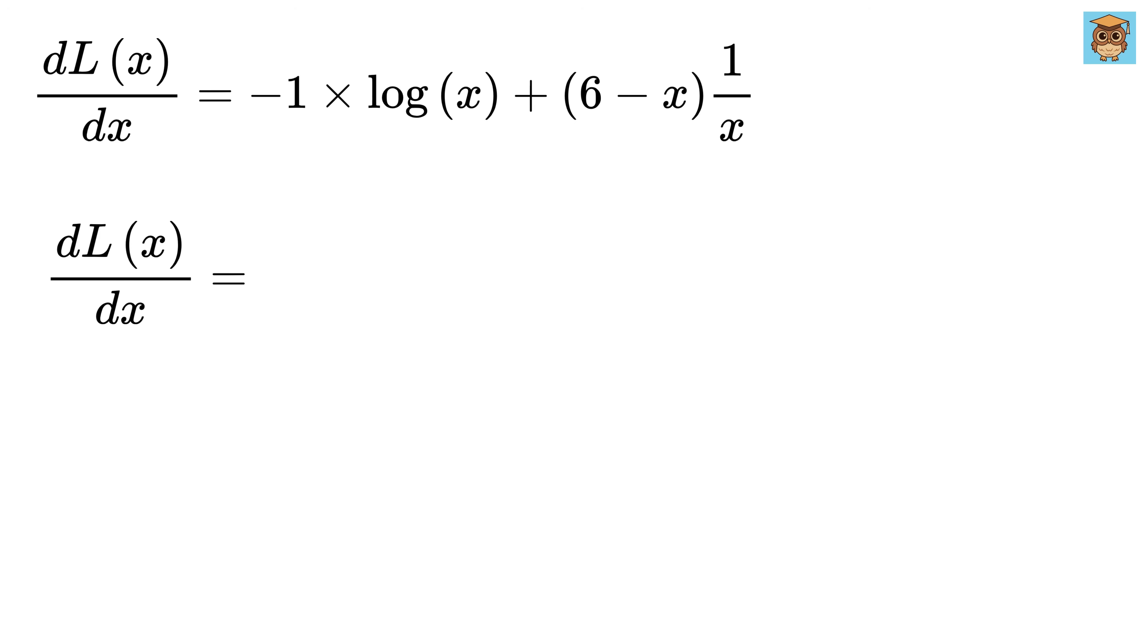Making the denominator common, we can also rewrite it as minus x times log x plus 6 minus x, divided by x. Now set it equal to 0.